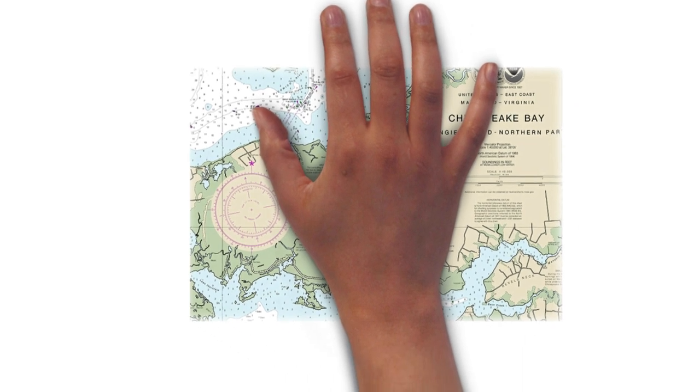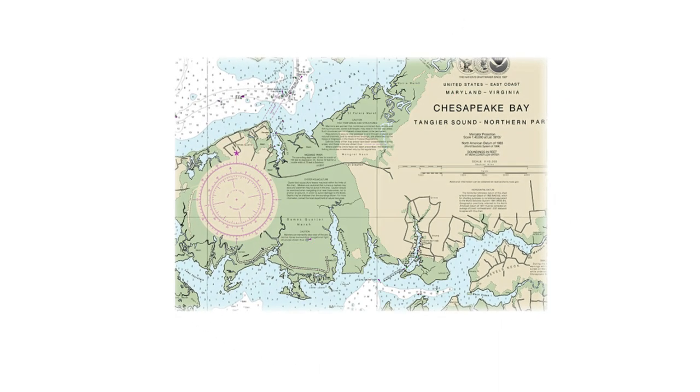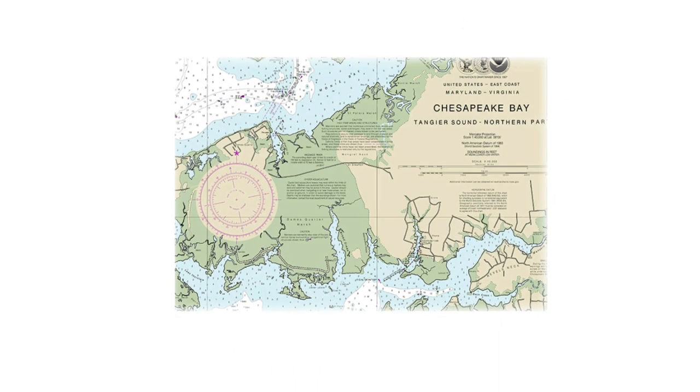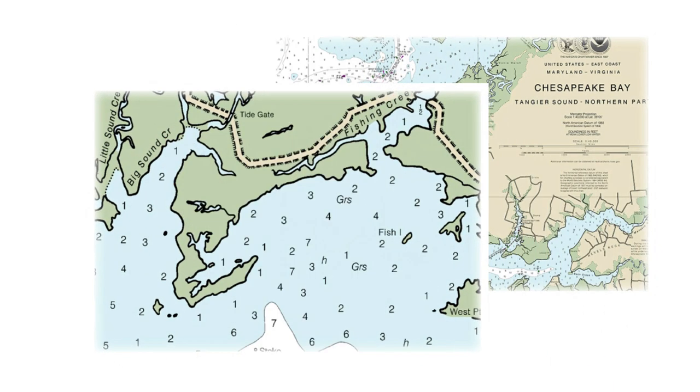NOAA collects information and images to define the shoreline, ultimately supporting safe navigation. Accurate shoreline information helps ships and boats make it safely in and out of port.